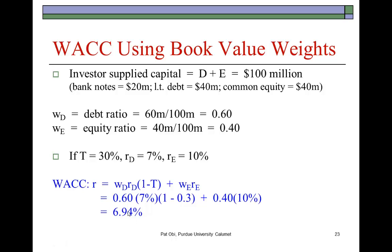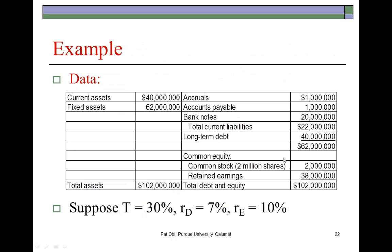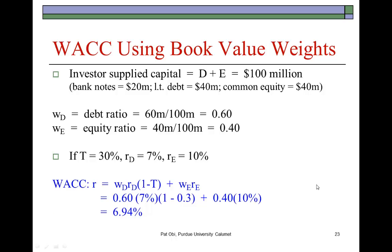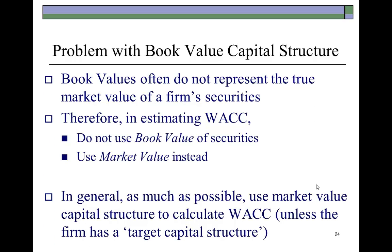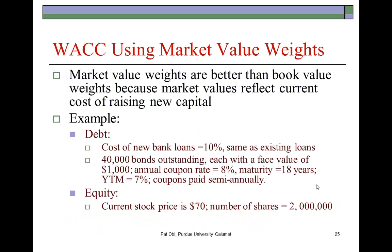The problem with using book values is that book values are kind of dated — this is simply reflecting the balance sheet structure, which may have been created several years ago when investors put in $2 million and the firm borrowed $40 million several years ago. So book values don't quite reflect current reality on the ground. Therefore, you should prefer the firm's market values. The use of market value capital structure reflects current prices in the market — if the firm should go out now to sell new bonds or new shares, how much would it cost? Based on that, we determine the capital structure.